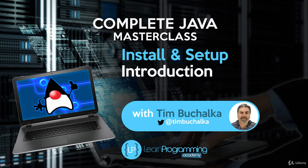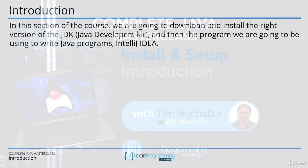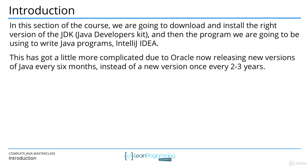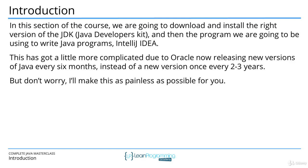In this section of the course we're going to download and install the right version of the JDK — the Java Developer's Kit — and then the program we're going to use to write our Java programs, which is IntelliJ IDEA. Downloading and installing the right version of Java has become a little more complicated due to Oracle now releasing new versions every six months, instead of once every two to three years. But don't worry, I'm going to make this as painless as possible.